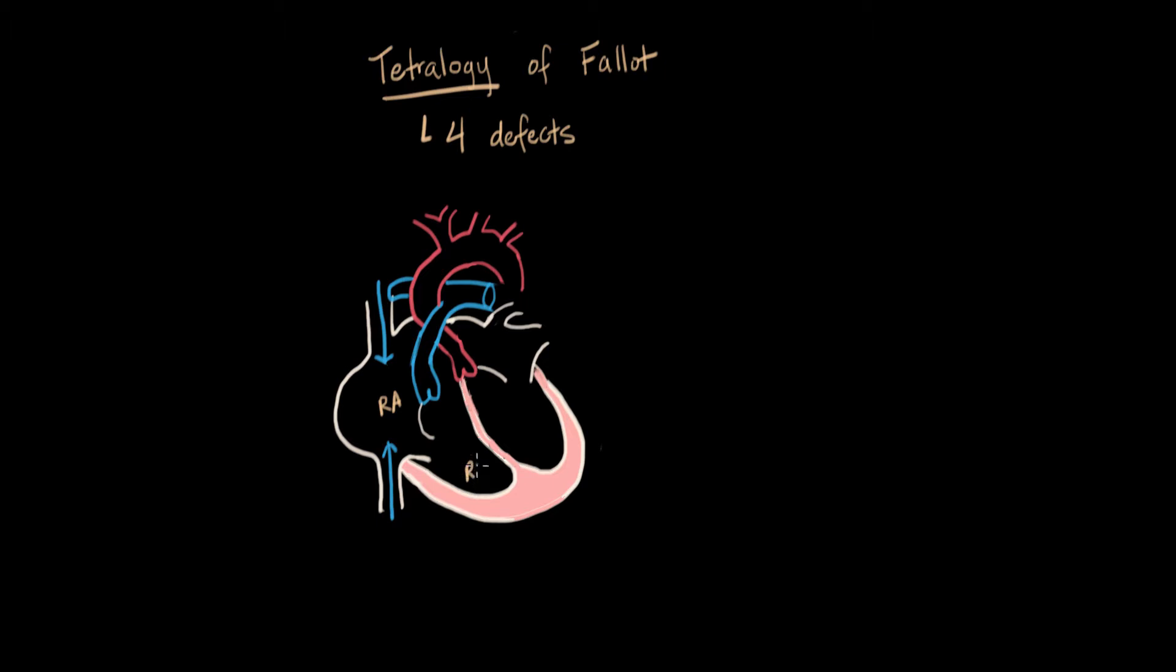From there, it goes to the right ventricle, which pumps it into this blood vessel, which is the pulmonary artery. Remember that any vessel that receives blood going out of the heart is an artery. So even though it's an artery, it's still blue deoxygenated blood.